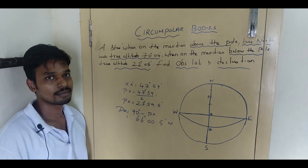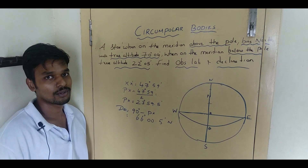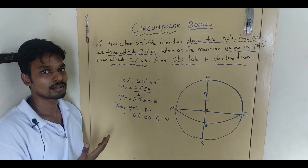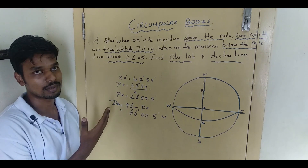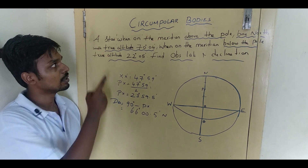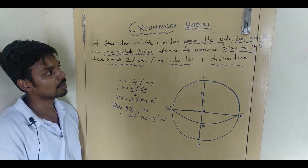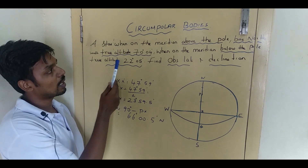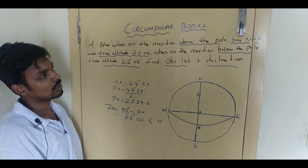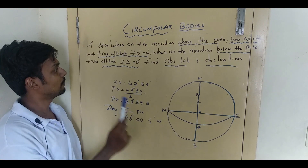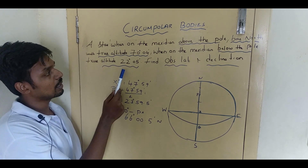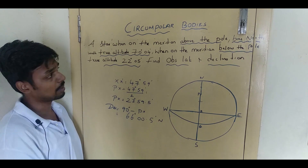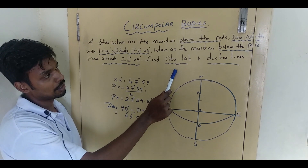Hi guys, today I'm going to explain the topic of how to do circumpolar problems. Going straight to the question: a star when on the meridian above the pole bearing north with a true altitude of 70 degrees 04 minutes, and when on the meridian below the pole true altitude 20 degrees 05 minutes. Both are bearing north, so both are on the same hemisphere. Find the observed latitude and declination.